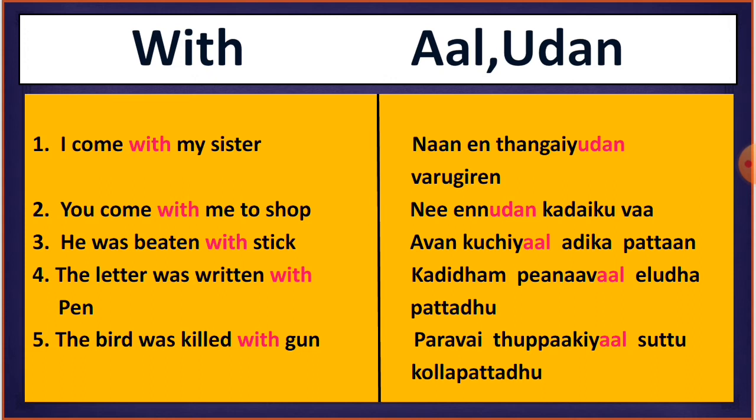Now let us look at the three cases where we use 'aal' in Tamil. The first case is whenever you are using an object. The second case is when with the help of that object you are doing something. The third case is when you are doing an action with the help of something. In all these three cases we will use 'aal'.